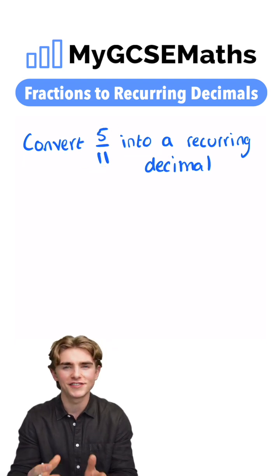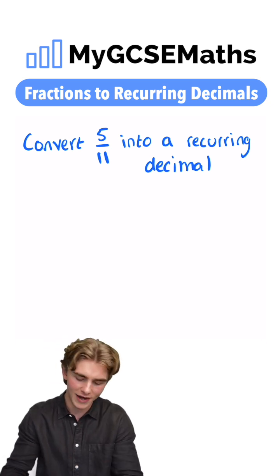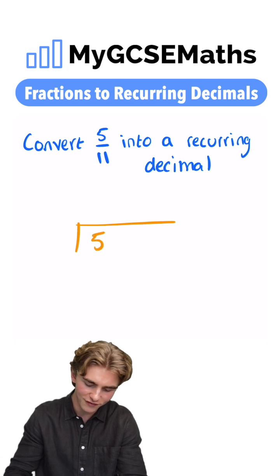The key here is to spot that 5 over 11 just means 5 divided by 11. So we can use our good old bus stop method. We're going to do 5 divided by 11, and this is a decimal, so we're going to need to put in a few zeros.